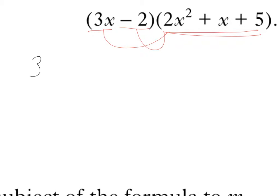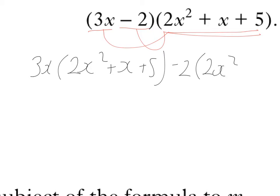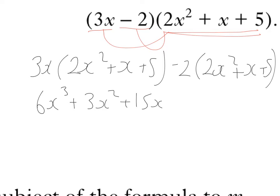So I'm going to start with 3x bracket 2x squared plus x plus 5, close the bracket, minus 2 bracket 2x squared plus x plus 5, close the bracket. So I've got 3x times 2x squared is 6x cubed. 3x times x is 3x squared. 3x times 5 is 15x. Minus 2 times 2x squared is minus 4x squared. Minus 2 times x is minus 2x. And minus 2 times 5 is minus 10.